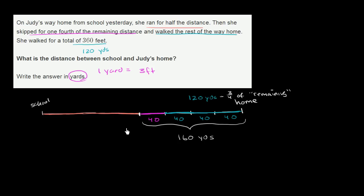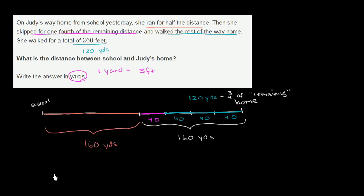Now, what is the total distance? This remaining distance of 160 yards after she ran is half the total distance. So if this half is 160 yards, then the other half — the part she ran — is also 160 yards. 160 yards plus 160 yards gives us a total distance from school to home of 320 yards.